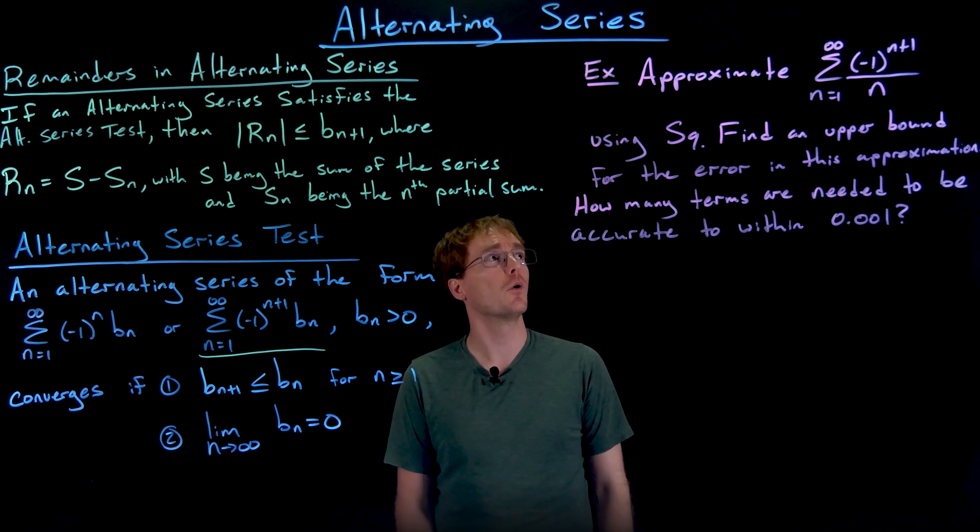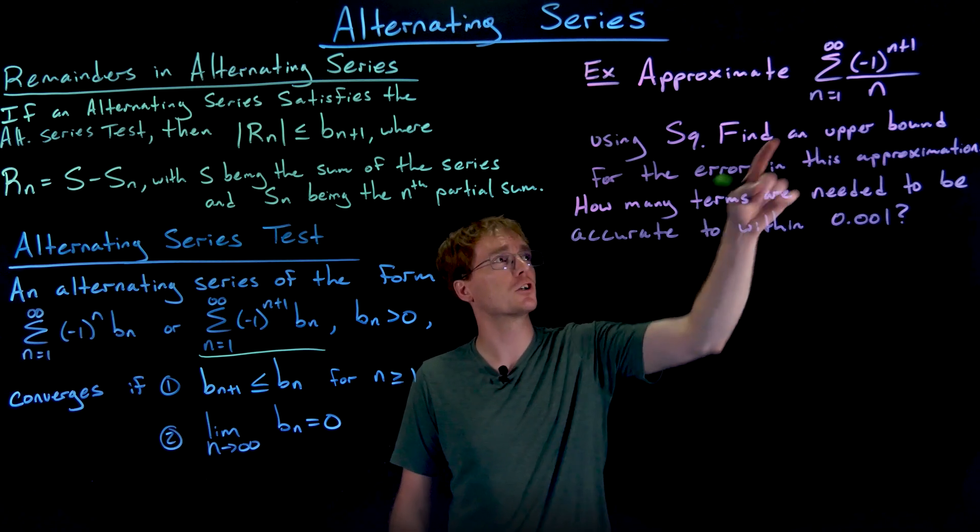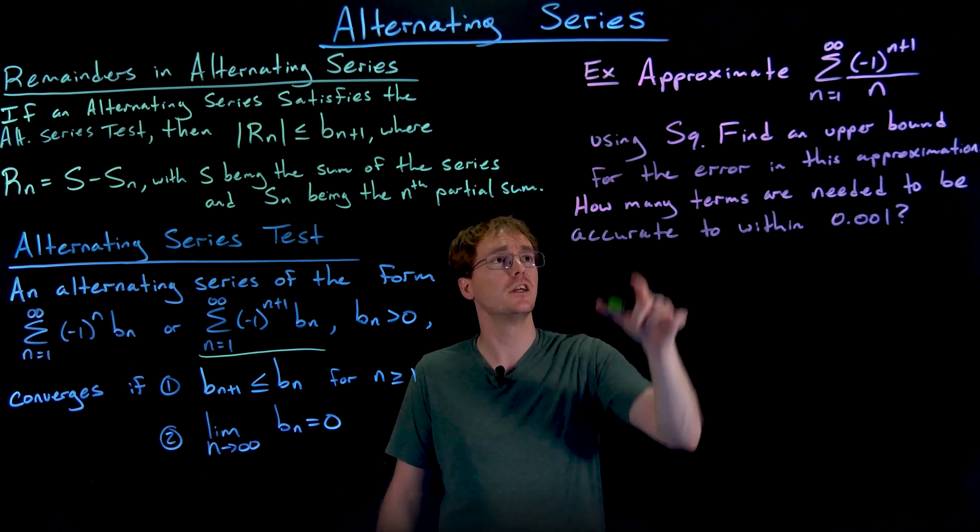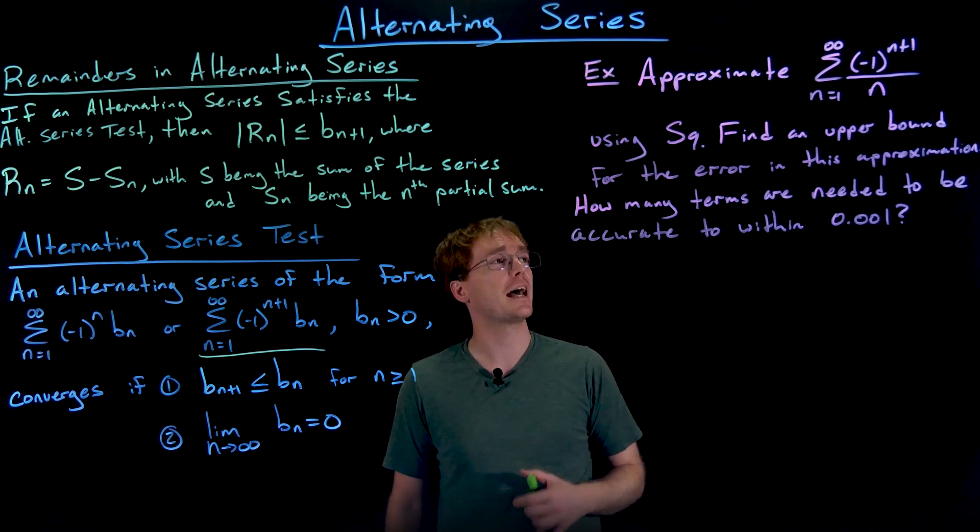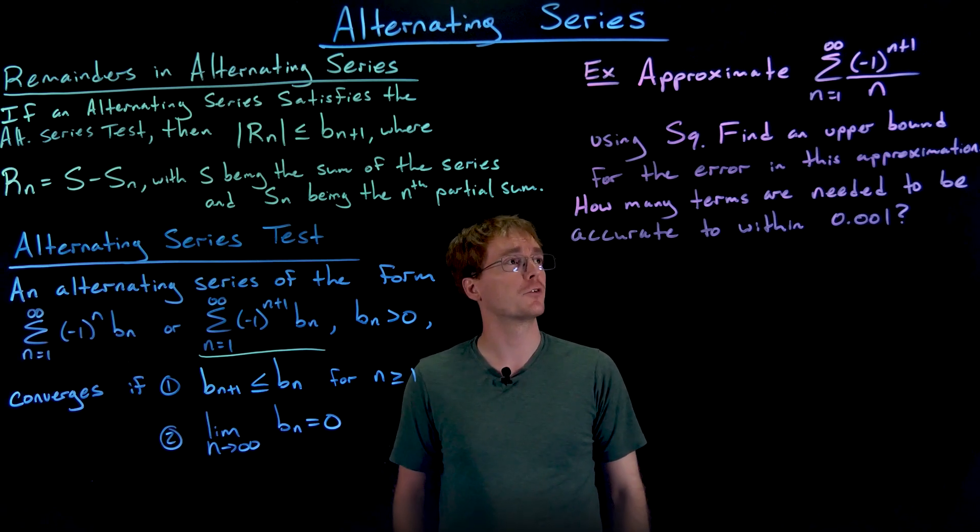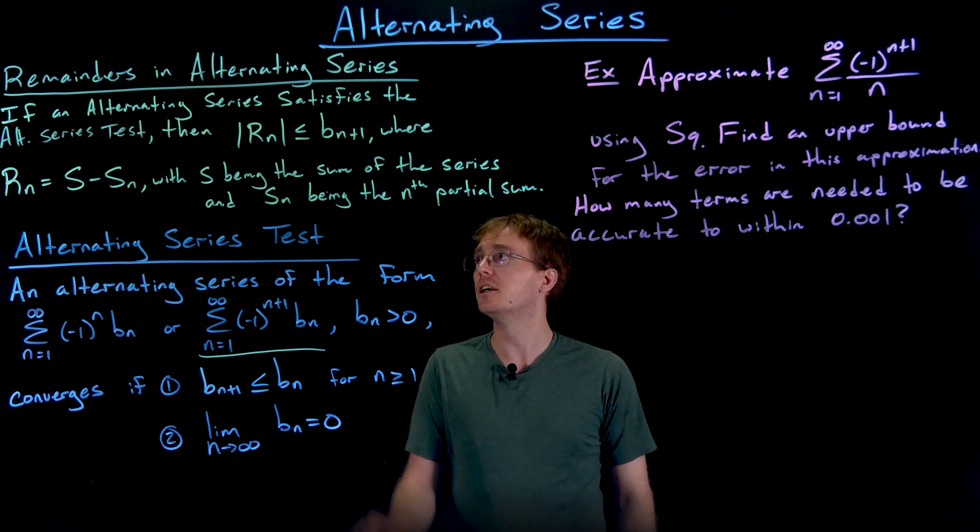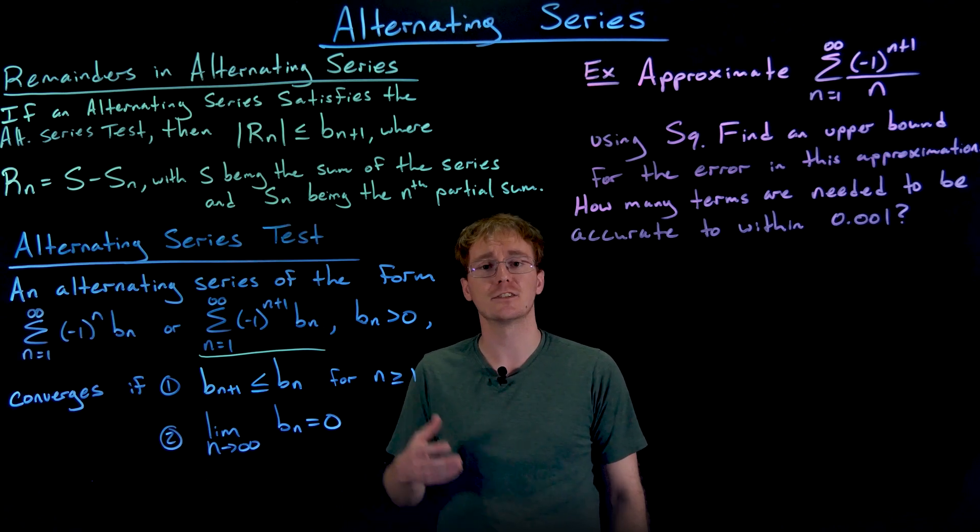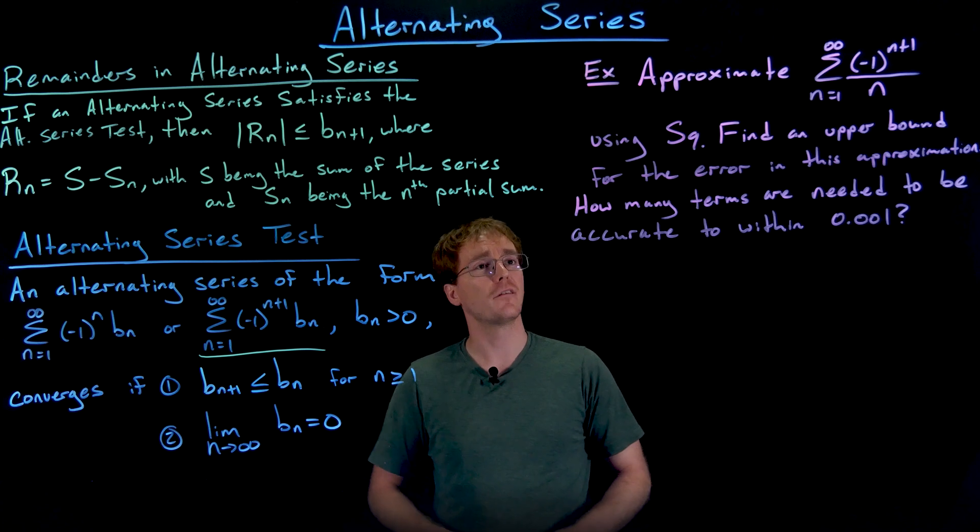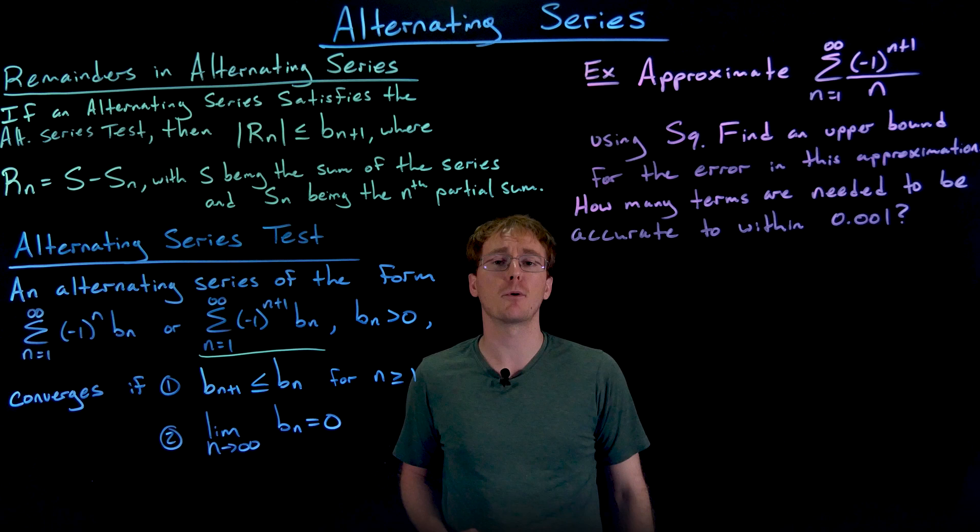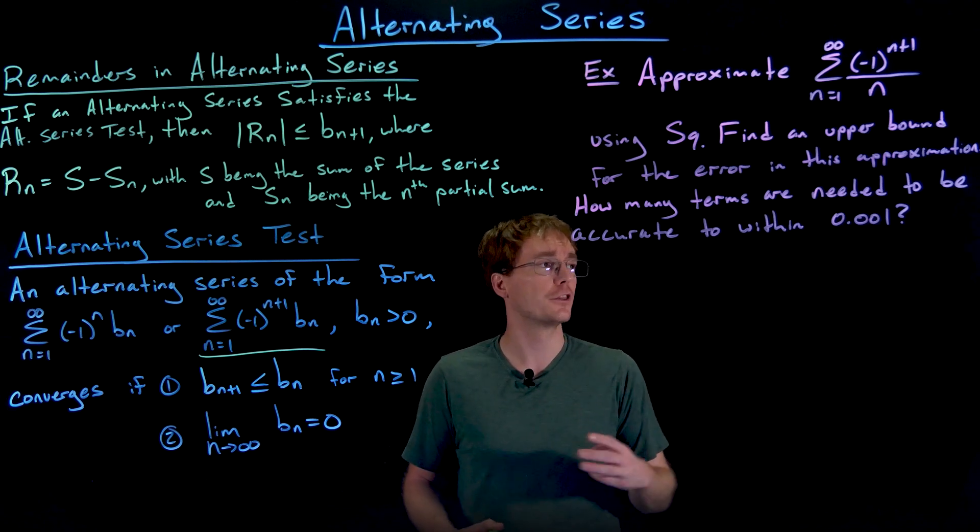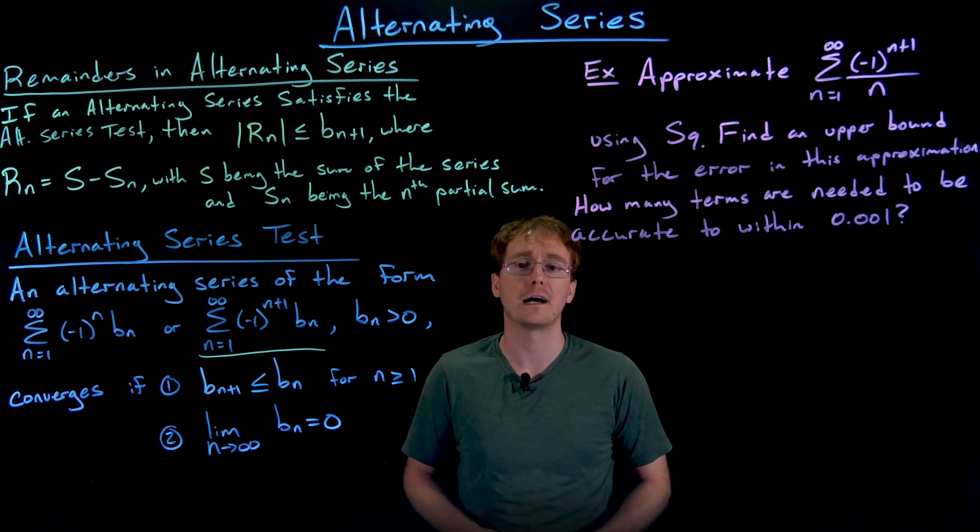In this example, we're going to approximate the partial sum of our alternating harmonic series using S sub nine, so the sum of the first nine terms. After that, we're going to find an upper bound for the error in our approximation using our remainder and alternating series theorem. And after that, we'll figure out how many terms we need in our partial sum so that our partial sum is accurate to three decimal places or one one thousandth.